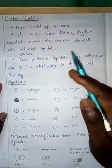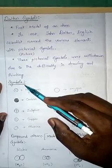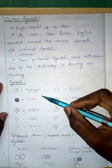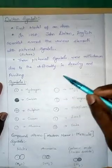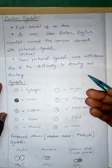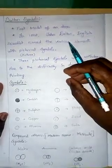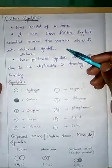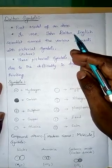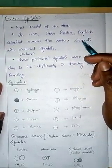Dalton developed various symbols, though these symbols are not used nowadays — they have historical importance only. However, in the process of developing symbols, Dalton made important contributions. He was the first one who proposed the first model of an atom, and some of the points he discussed are still referenced today.